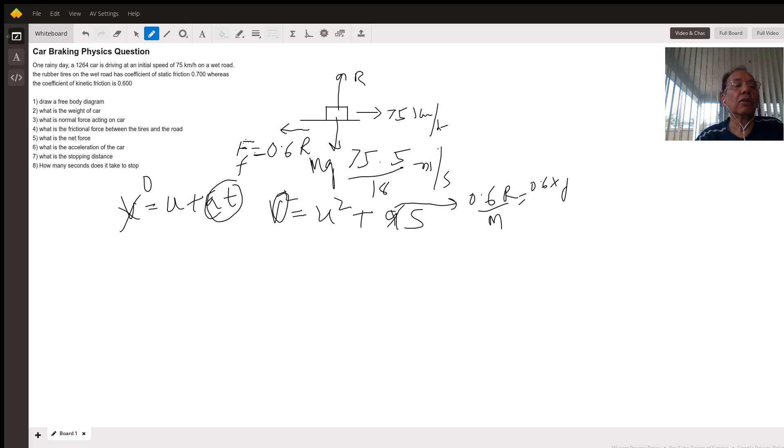The normal reaction is 1264 multiplied by g. Plugging in the value gives the force of friction, which causes a deceleration to the car.